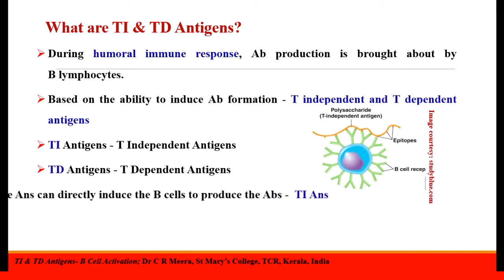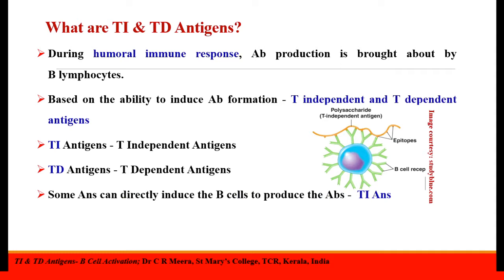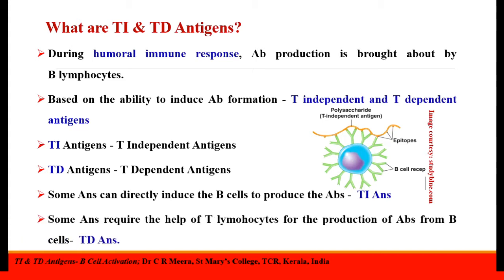Some antigens can directly induce the B-cells to produce the antibodies and are called T-independent antigens. However, some antigens require the help of T-lymphocytes for the production of antibodies from the B-cells, and these antigens are called T-dependent antigens.